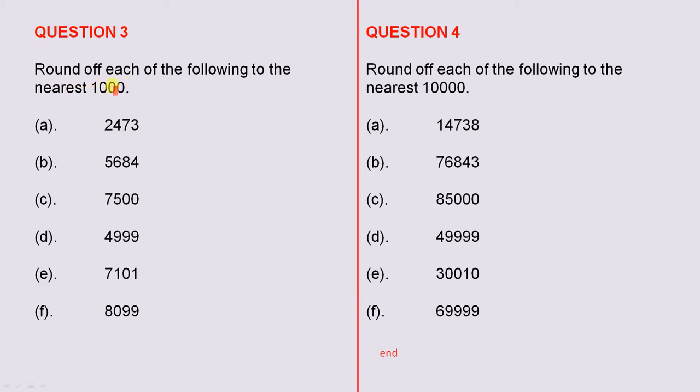It says to the nearest one thousand, which means that in the answer when you do the rounding off, you have to have at least three zeros in the answer.